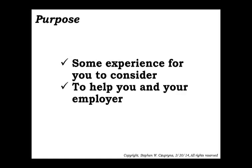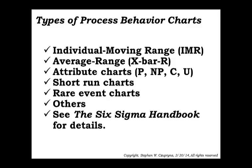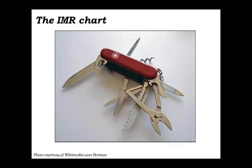So we'll now start on a brief overview of process behavior charts. There are quite a few of them: individual moving range charts, which we'll talk about today, the average range chart, control charts for attributes, short runs. Tom Peisic's book, Six Sigma Handbook, covers all of those in detail. Today we're only going to speak about the IMR chart.